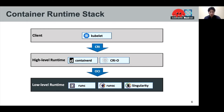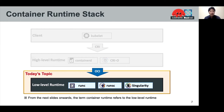This slide shows the software stack of the container runtime. This supports users creating containers via Kubernetes. First, Kubernetes communicates with high-level container runtimes such as containerd and CRI-O through CRI, which stands for Container Runtime Interface. Second, the high-level runtime pulls images from registries, manages them, and hands over to a low-level runtime through OCI. Lastly, low-level runtimes such as RunC create and launch containers using Linux features. Today's topic is the low-level container runtime.